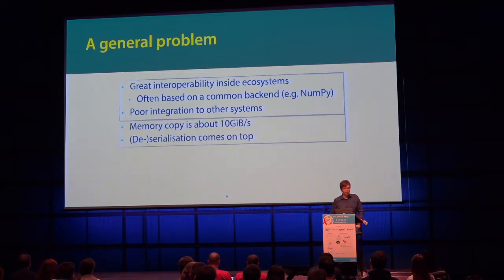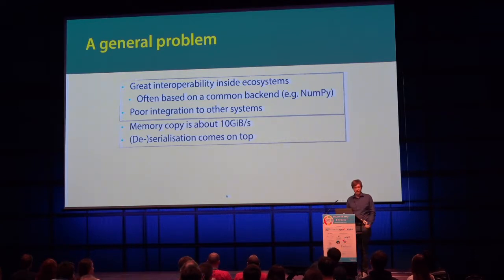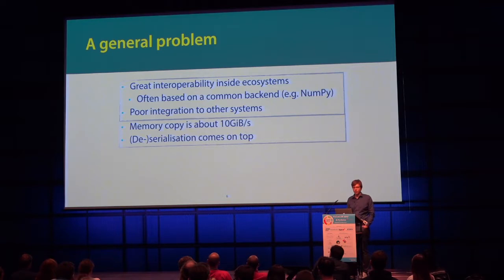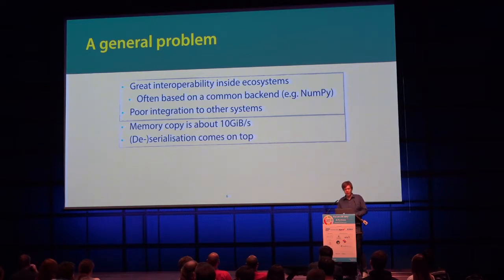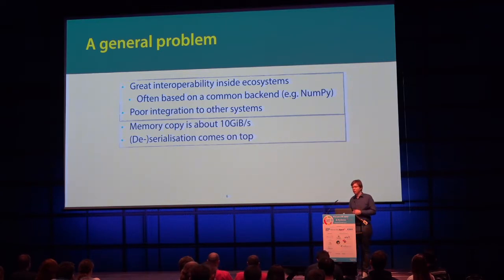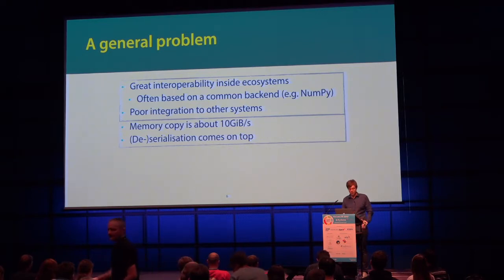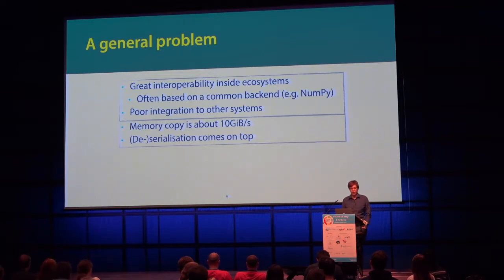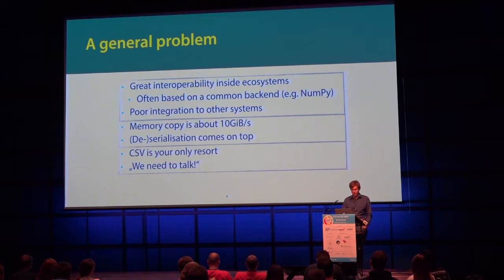When you pass data around, it also has a cost. If you do an operation and copy memory, on consumer hardware like a laptop you get around 10 gigabytes per second memory copy throughput if you do it well with aligned memory. But when you pass data to other systems, you have to serialize it — that's CPU overhead on top — which may mean data is stored in a different memory pattern, causing a huge drop below those 10 GB/s and wasting more CPU cycles. The fallback standard that every system supports is, sadly, CSV.